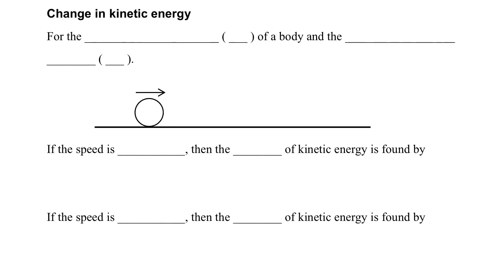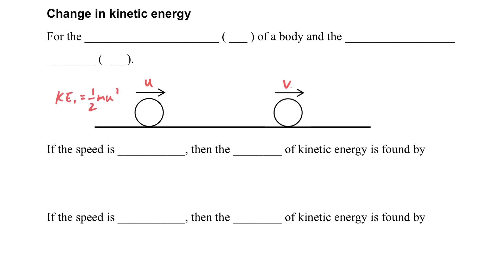Change in kinetic energy. In this part, we will consider an object. If it changes velocity, then the kinetic energy will also be changed. So in this situation, if the initial velocity is U and the final velocity is V, then we can get two different kinetic energies.